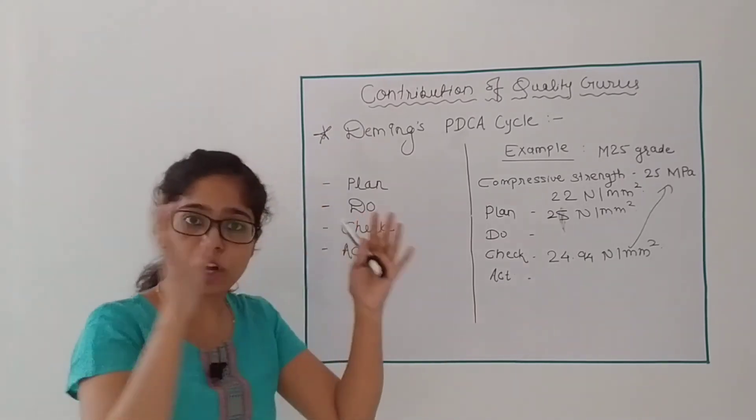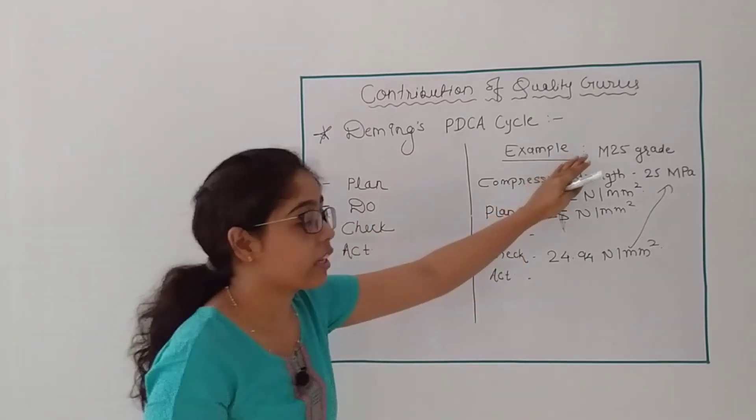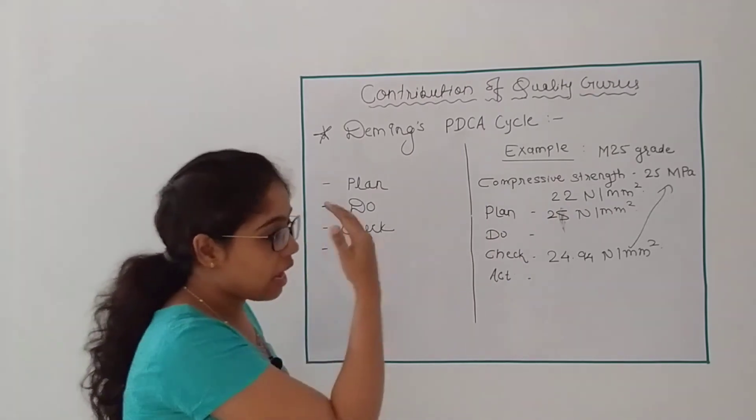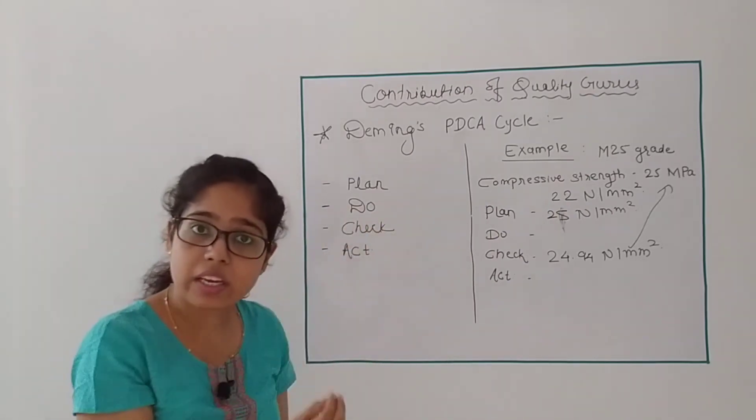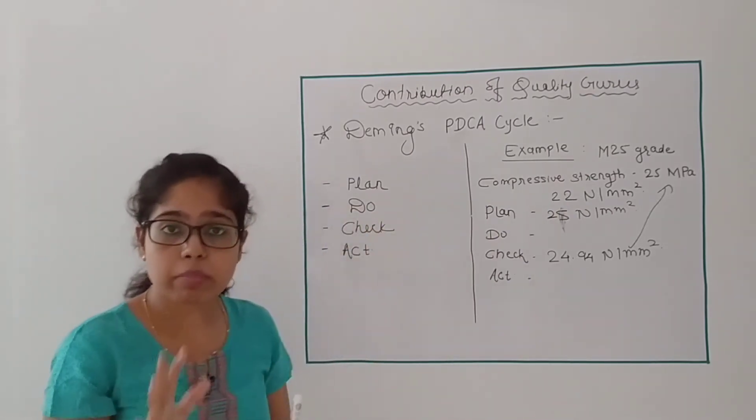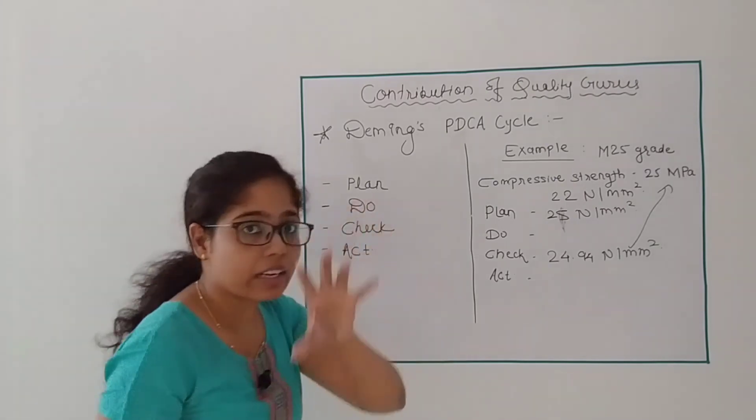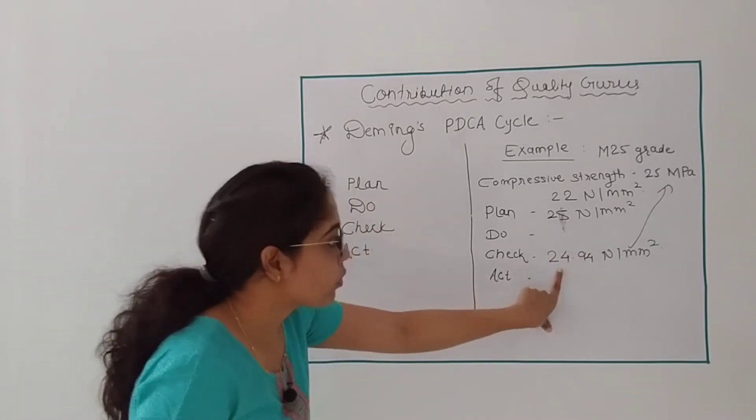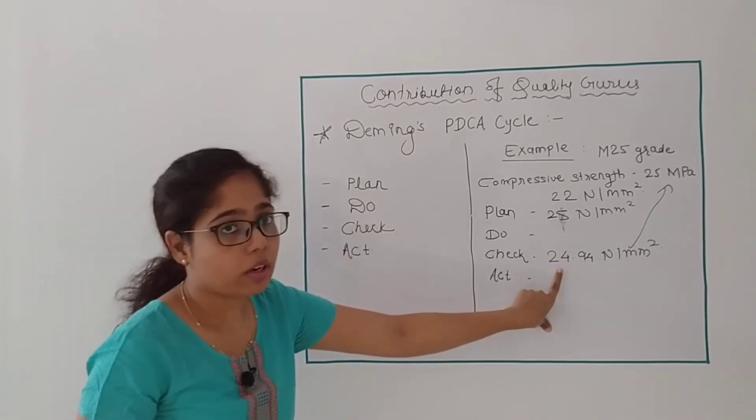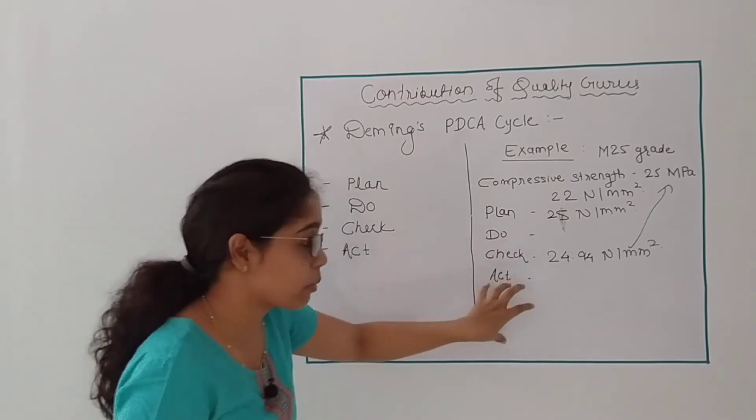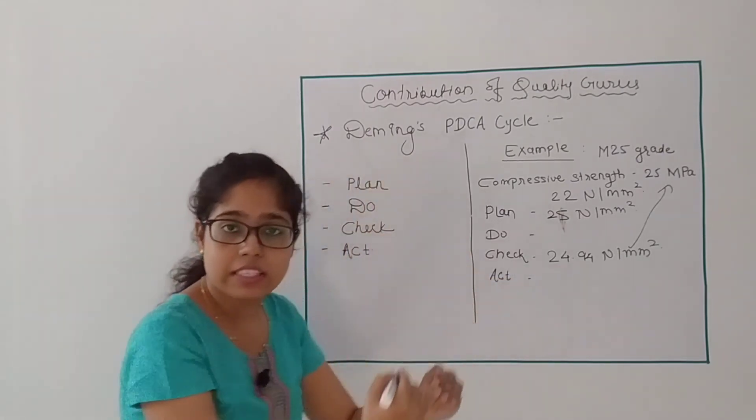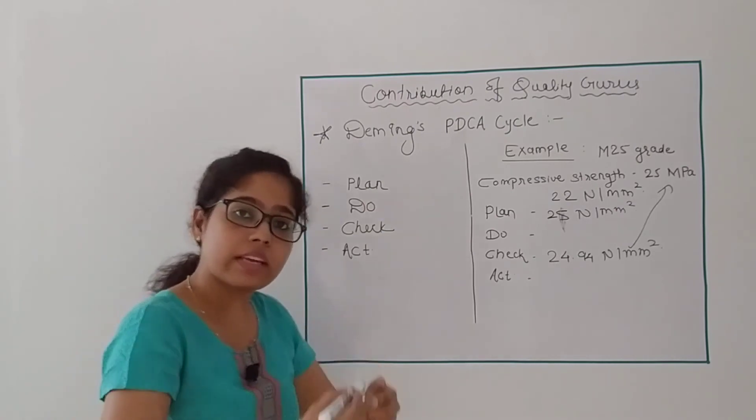So what happens in the Act phase? Now I will keep the production of the M25 grade. I will take all the materials in the same quantity, room temperature, mixing time, all that is implemented, and I will make it a standard. What you have processed, you have to repeat the process.